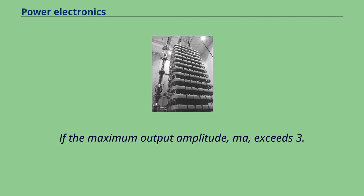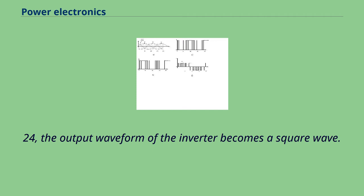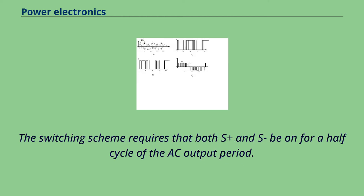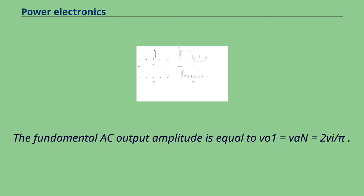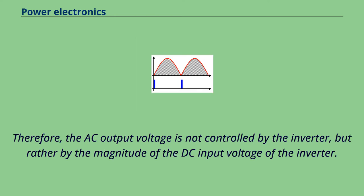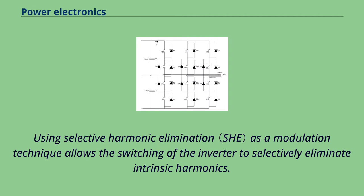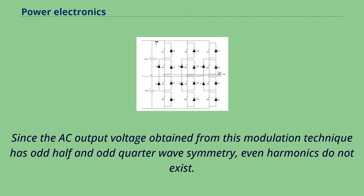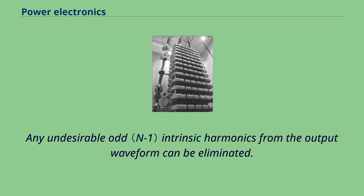If the maximum output amplitude MA exceeds 3.24, the output waveform of the inverter becomes a square wave. For square wave modulation, both switches in a leg cannot be turned on at the same time, as this would cause a short across the voltage source. The switching scheme requires that both S-plus and S be on for a half cycle of the AC output period. The fundamental AC output amplitude is VO1 = VAN = 2V / π, and its harmonics have an amplitude of VO = VO1 / h. Therefore, AC output voltage is not controlled by the inverter but rather by the magnitude of the DC input voltage. Using selective harmonic elimination allows the switching of the inverter to selectively eliminate intrinsic harmonics, and the fundamental component can also be adjusted. Since the AC output voltage has odd-half and odd-quarter wave symmetry, even harmonics do not exist.